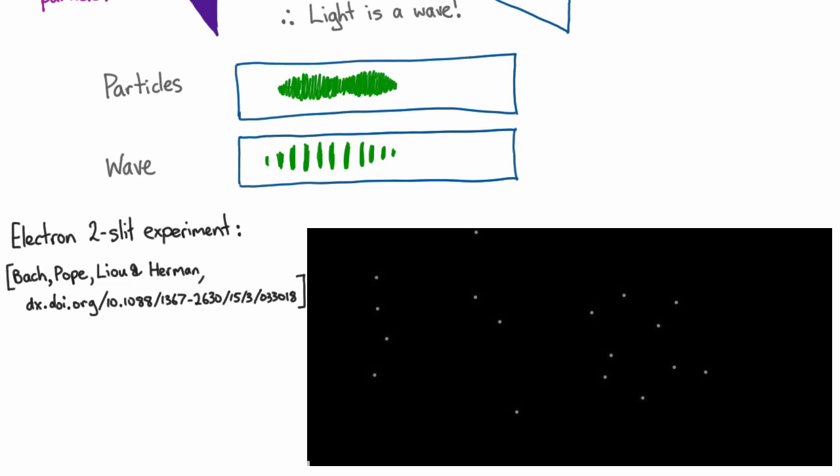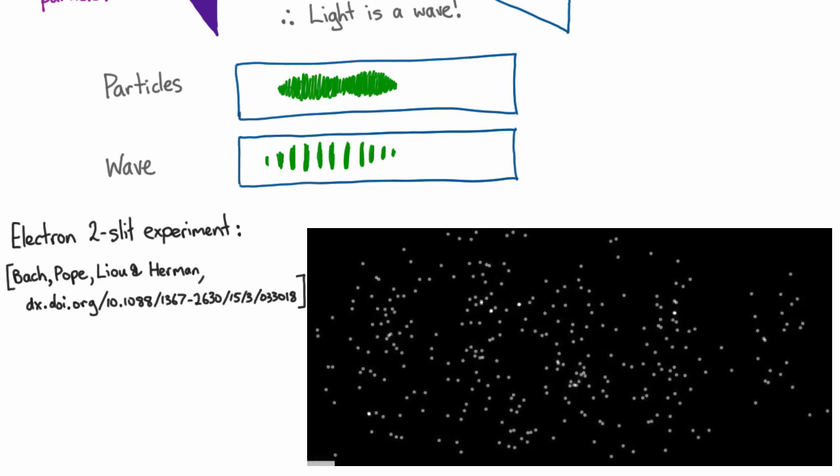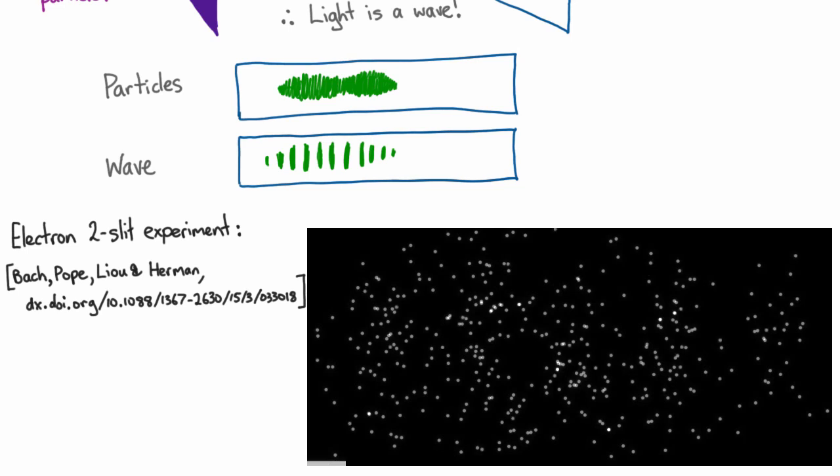If it had been a wave then we would have seen a weak interference pattern. So it would have been those bright and dark interference fringes across our entire screen but very very weak. And instead we're seeing these blobs so alright they're particles.